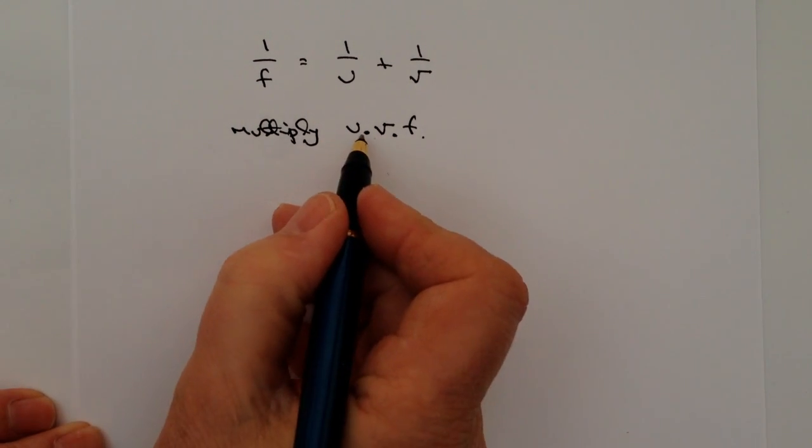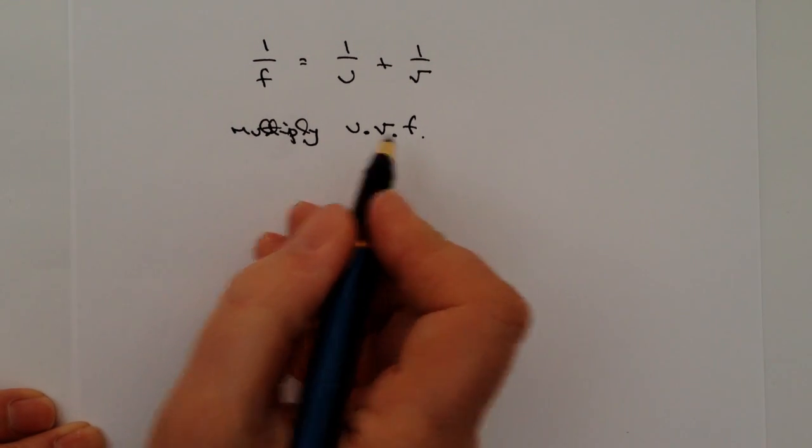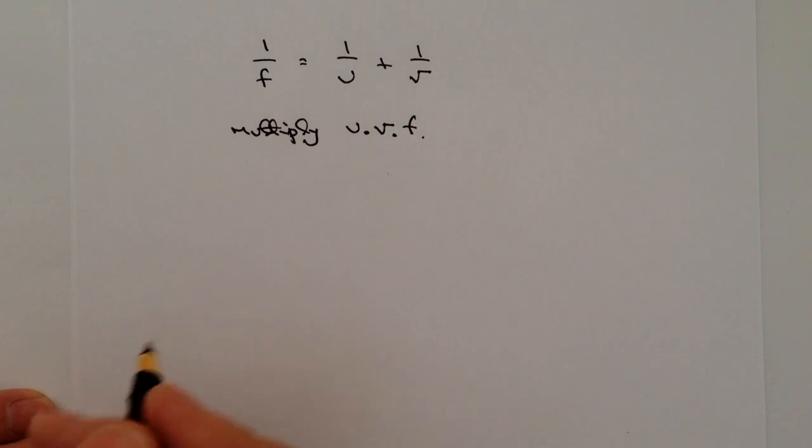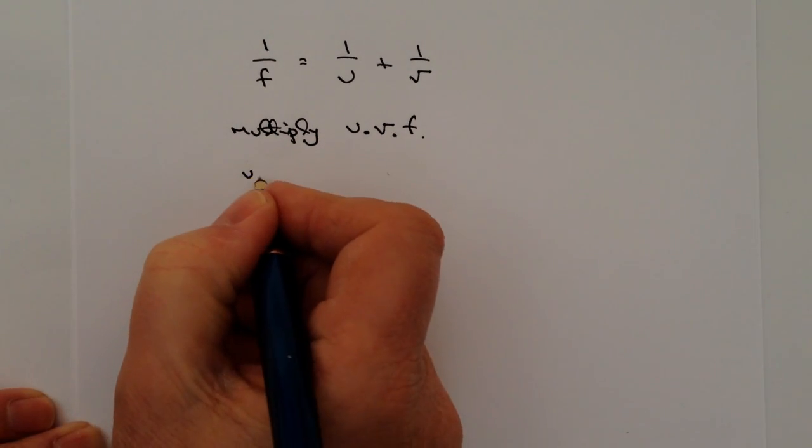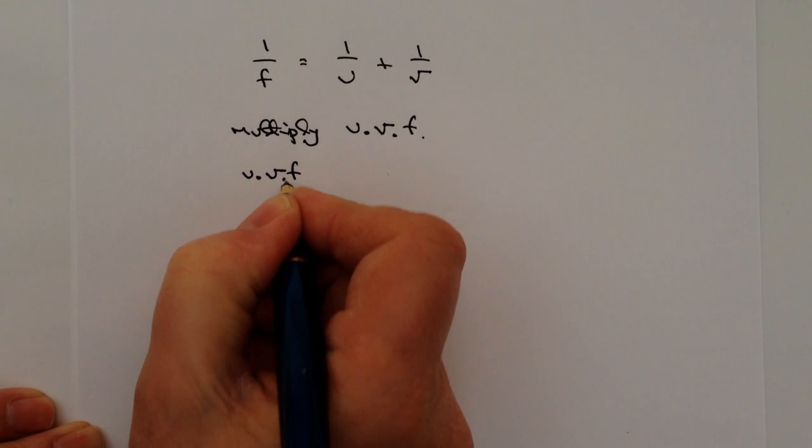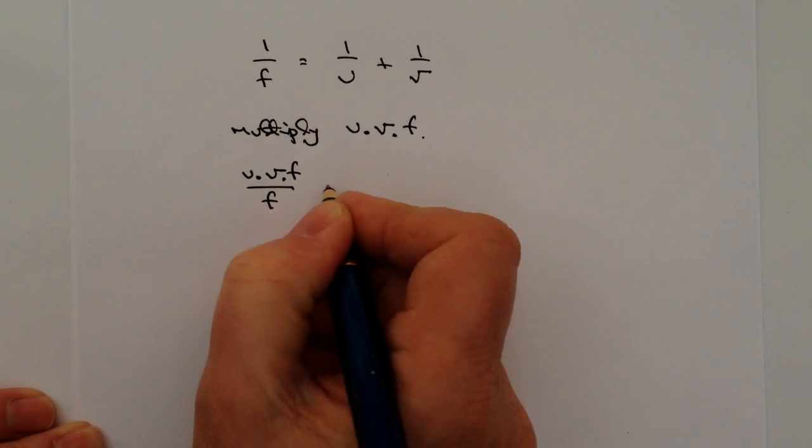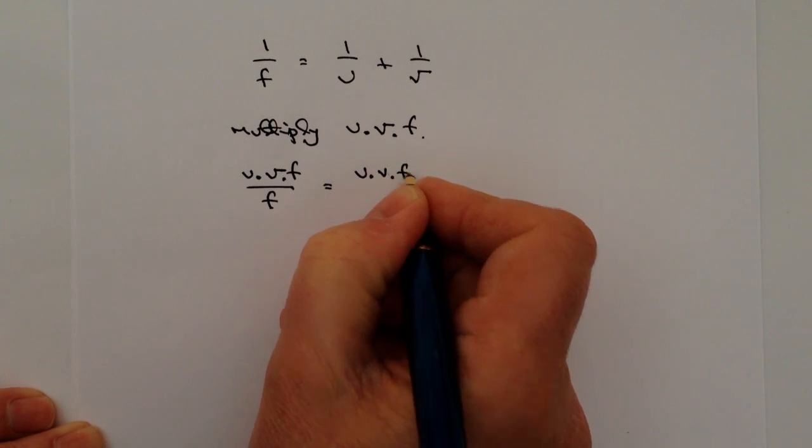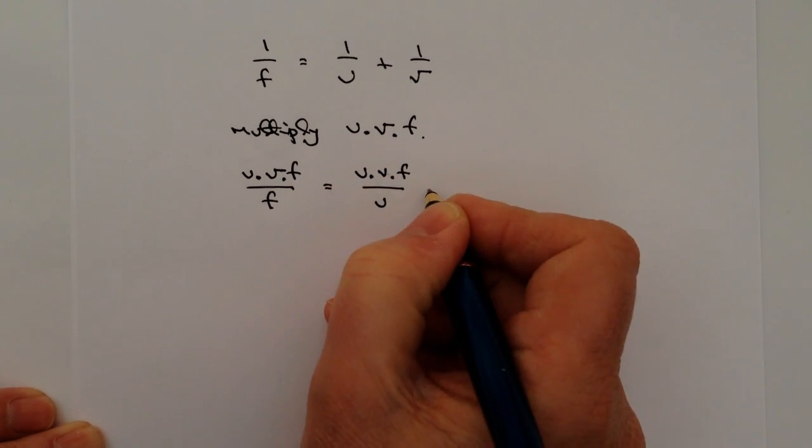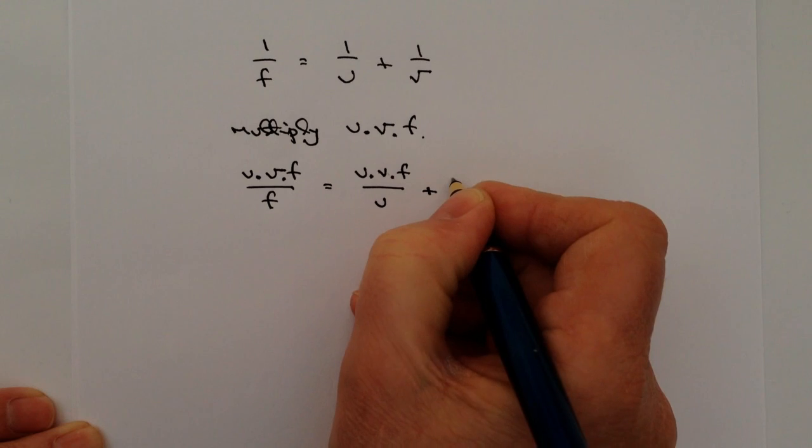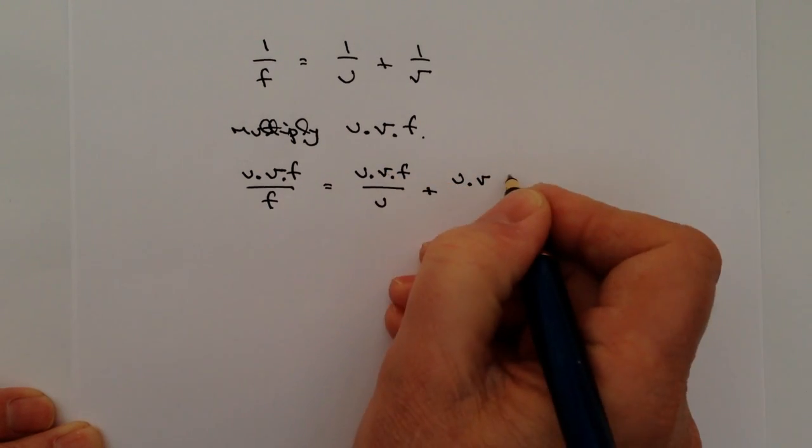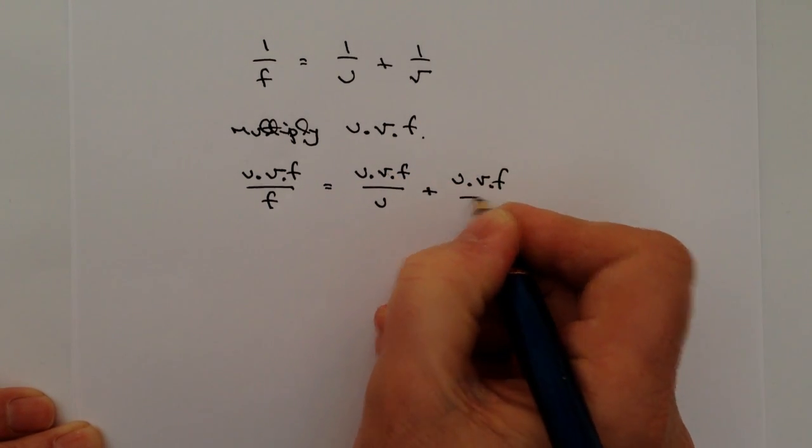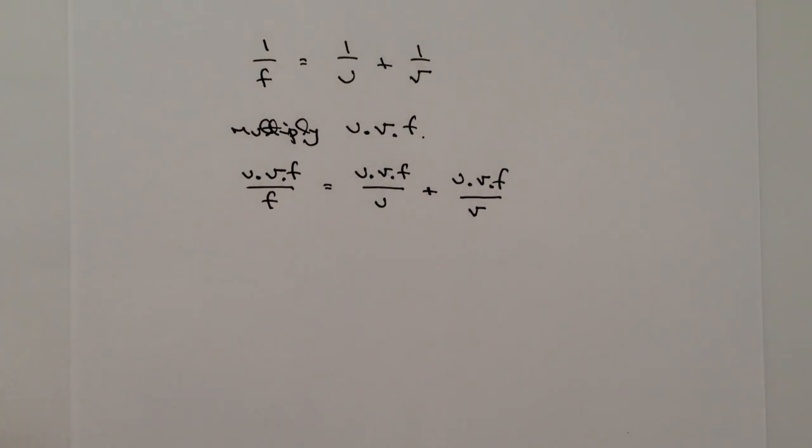What we'll end up with is u times v times f times 1 over f. So on the left hand side I'm going to get uvf divided by f equals uvf divided by u plus uvf divided by v.